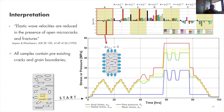Interpreting these results: Sayers and Kachanov (1990s) pointed out that elastic wave velocities are reduced in the presence of open micro-cracks and fractures. All samples contain pre-existing cracks and grain boundaries which are more or less open. When pressurized, these will slightly close. The effect of isotropic stress cycling is very small — a small increase in Vp due to time-dependent closure of cracks and grain boundaries — and that's what we recognize in these samples, excluding the outlier that likely failed during the experiment.